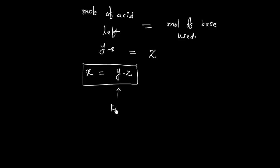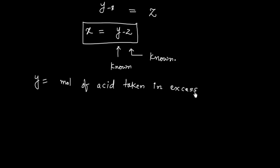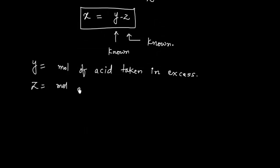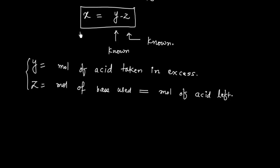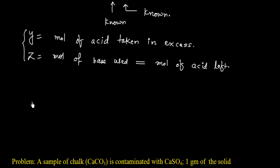Now y is known — it is the moles of acid initially taken in excess. And z is also known — it is the moles of base used to titrate the leftover acid, which equals the moles of acid left. Knowing these two numbers, we can calculate x, the moles of base in the original sample, and then calculate the percentage purity.